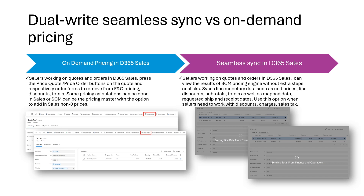Some pricing calculations can still be done in Sales, or you can choose for Supply Chain Management to be the pricing master. You can also configure trade agreement evaluation so that non-zero prices from Dynamics 365 Sales are accepted in Finance and Operations. The other method is dual-write seamless sync, which has been recently introduced. It saves users extra clicks — instead of pressing the Price Quote or Price Order buttons, the line prices, discounts, and totals get calculated automatically in F&O SCM and saved back on the sales records after create and update events of quotes and orders, as well as their related lines.